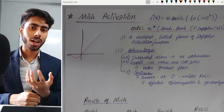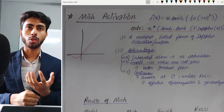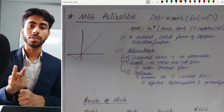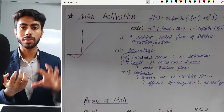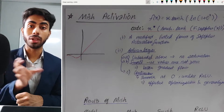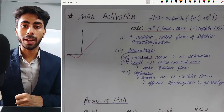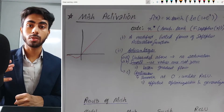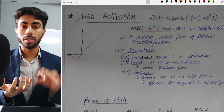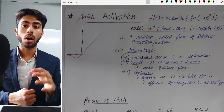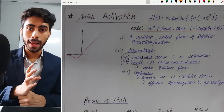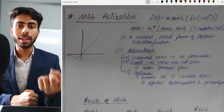Before we start with today's video, let us discuss all the activation functions we have covered till now. We begin with sigmoid and tanh, discussing all their advantages and disadvantages. After that we learned how relu tried to solve the drawbacks of sigmoid and tanh. We discussed all its properties, advantages and disadvantages, and learned how the dying relu problem was solved by its variants: leaky relu, p-relu, and elu.